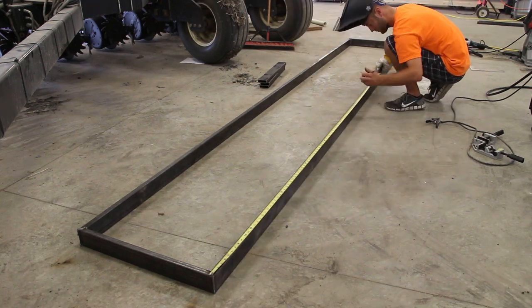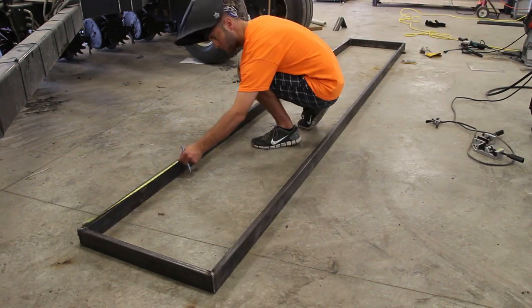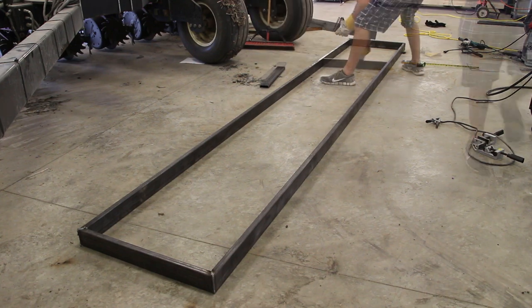Here I'm measuring for the supports. I find the total length, divide that in half and make a mark. Then divide that again for the other two supports.